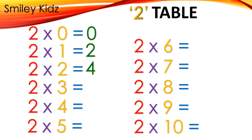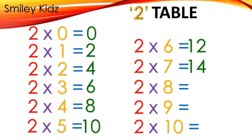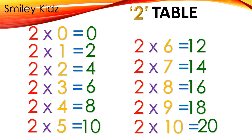2×3=6, 2×4=8, 2×5=10, 2×6=12, 2×7=14, 2×8=16, 2×9=18, 2×10=20.